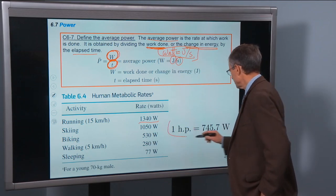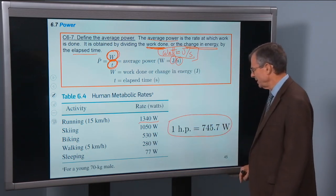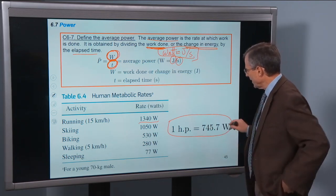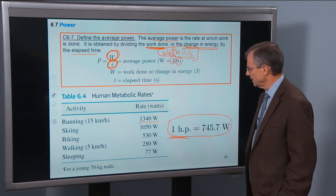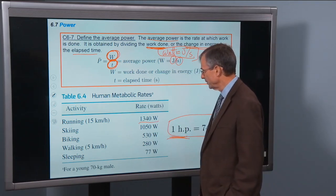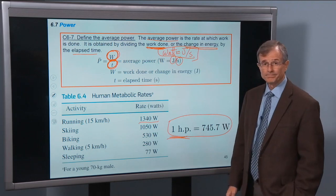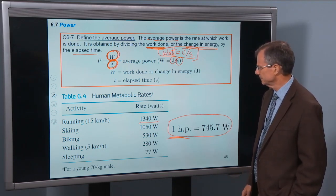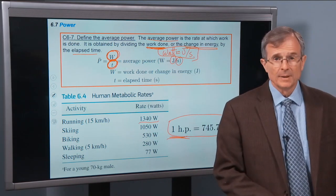And here's a conversion factor between watts and horsepower. You need 745.7 watts to make one horsepower. So when you're running, you're using a fair amount of power, more than a horsepower. And that's power.